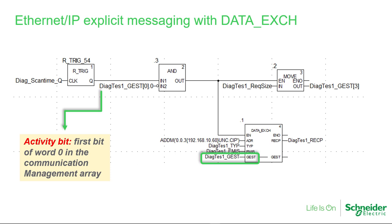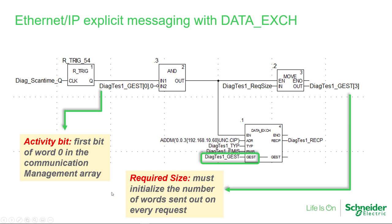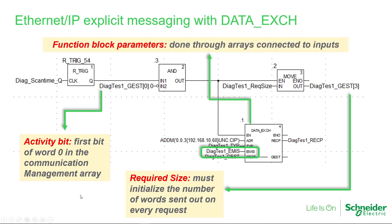When using the data exchange function block, there is a very important structure connected to the bottom pin where parameters such as the communication timeout are managed. Every time it is triggered or initialized, a value must be moved into one of the words of that array indicating the number of words to be sent in the query. Through another structure connected to one of the input pins, you enter the class, instance, and attribute values to address the object dictionary of the device.